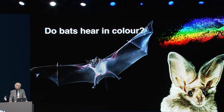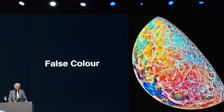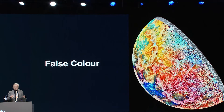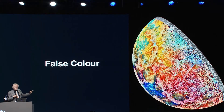I'm going to end with an irresponsible speculation based on this. I suggest that bats hear in color. We all get a bit fed up when we see false color images — this is an image of the moon using false color to designate geological differences. False color images are used commonly for such purposes, and I get rather annoyed and say, is the moon really that color? No, of course it isn't. We're using false colors simply as a label to illustrate geological features.